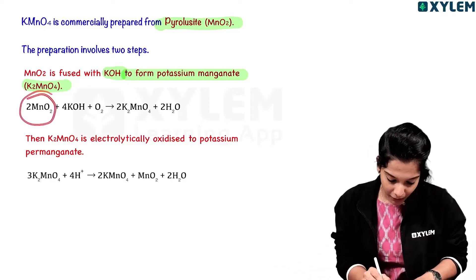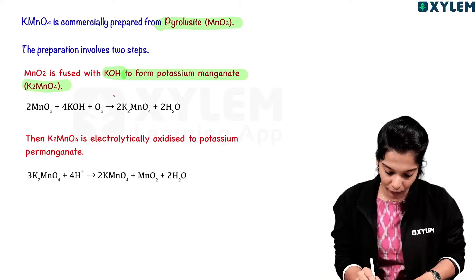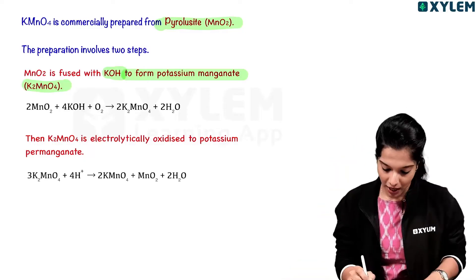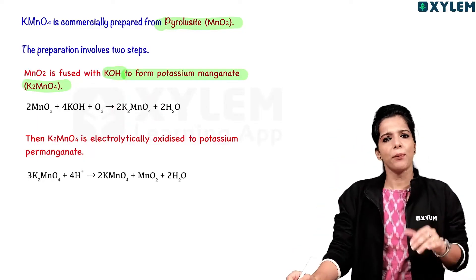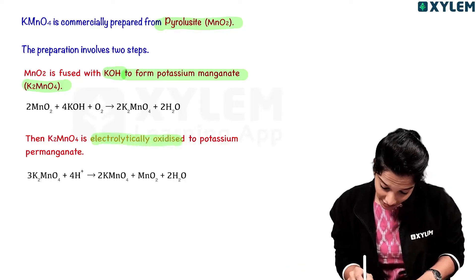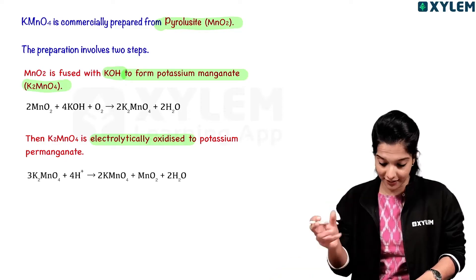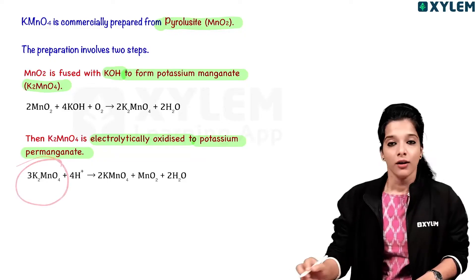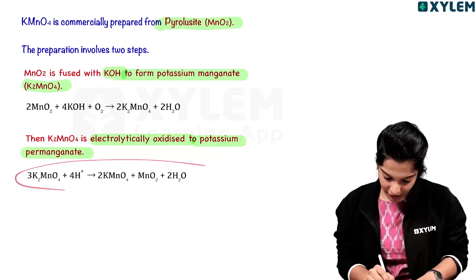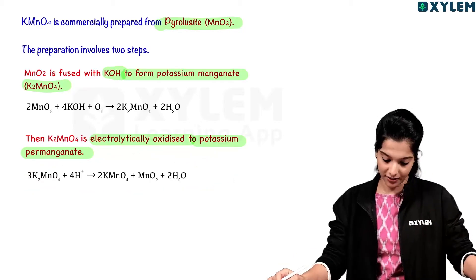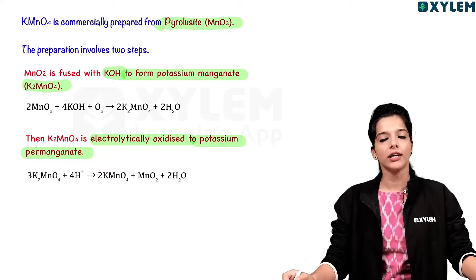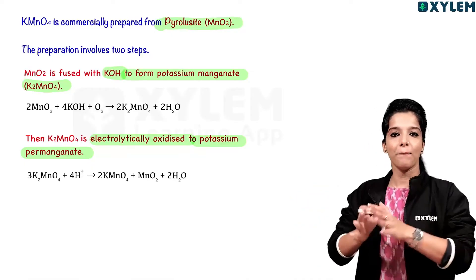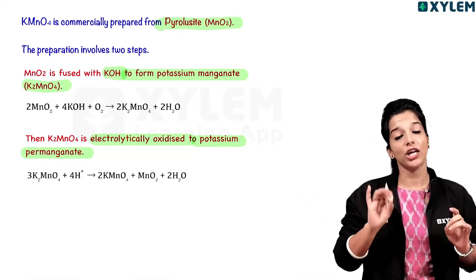First step is pyrolusite MnO2 reacted with KOH in the presence of oxygen and heat to give potassium manganate K2MnO4. Then potassium manganate is electrolytically oxidized in acidic medium to give KMnO4. Try to write and balance the equation.